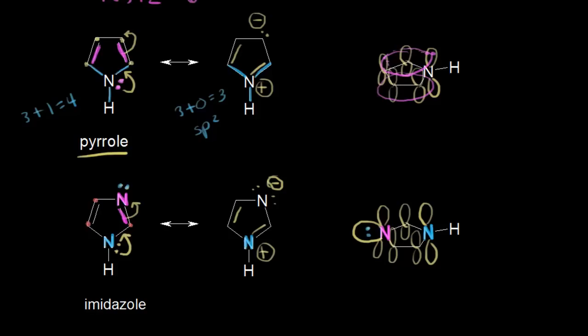When we check the criteria for aromaticity: our first criterion — we have overlapping p orbitals, and everything is sp2 hybridized in our ring. We also need 4n plus 2 pi electrons. The pi electrons are: here's 2, here's 4, and then this lone pair on our nitrogen — those are actually pi electrons, as we can see from the resonance structure. So there are actually 6 pi electrons in the imidazole molecule, and those pi electrons are delocalized around the overlapping p orbitals. So the imidazole molecule is aromatic as well.